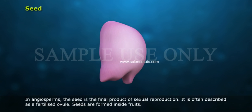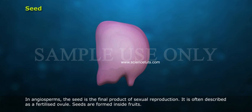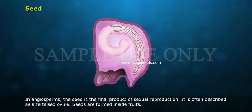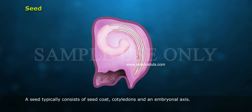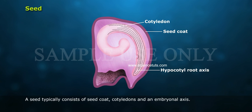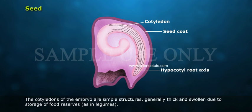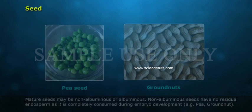In angiosperms, the seed is the final product of sexual reproduction. It is often described as a fertilized ovule. Seeds are formed inside fruits. A seed typically consists of a seed coat, cotyledons, and an embryonal axis. The cotyledons of the embryo are simple structures, generally thick and swollen due to storage of food reserves, as in legumes.